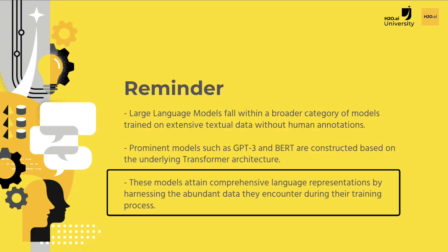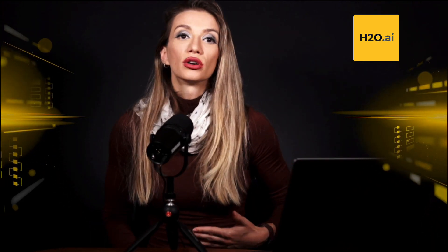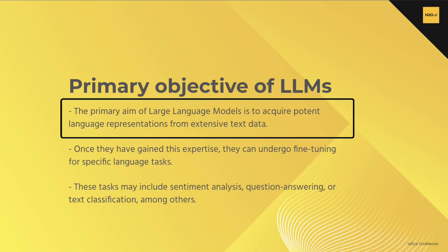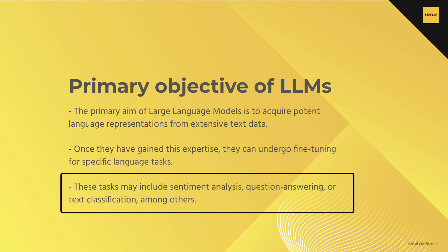These models acquire comprehensive language representations by leveraging the extensive data they encounter during training. In terms of their purposes, the transformer architecture was initially designed for tasks such as language translation and sequence generation, where understanding long-range dependencies between words is crucial. The primary objective of large language models, on the other hand, is to learn powerful language representations from extensive text data. Once they have acquired this knowledge, they can be fine-tuned for specific language tasks such as sentiment analysis, question answering, or text classification.